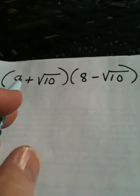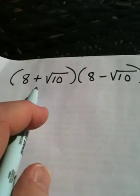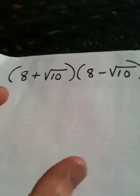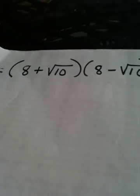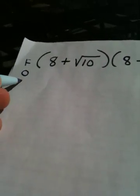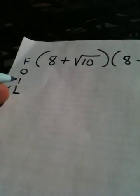Okay, if we are multiplying these two binomials together—a binomial times a binomial—you've been taught in the past to use the FOIL method, which is a good acronym. FOIL stands for first, outer, inner, last.